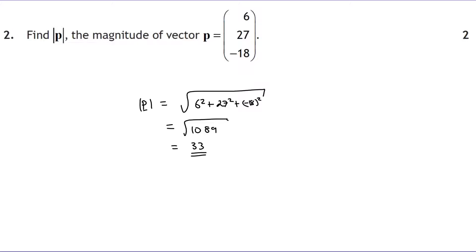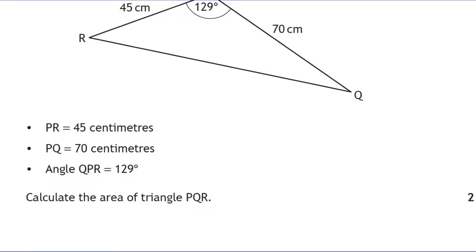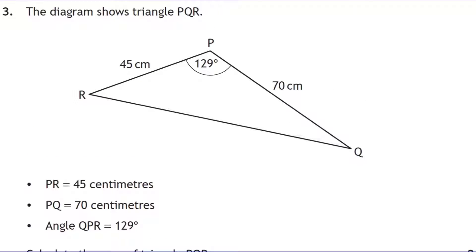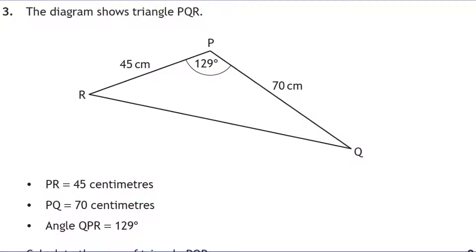Question three asks for the area of a triangle. It's a non-right-angle triangle with an angle of 129 degrees given. We take the formula from the formula sheet: area equals a half times a times b times sine C, where C is the angle between the two given sides.